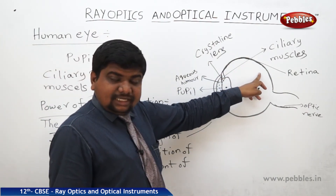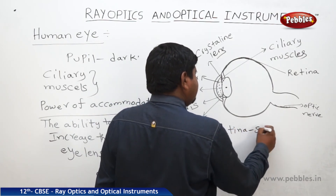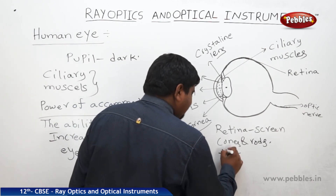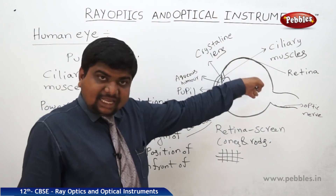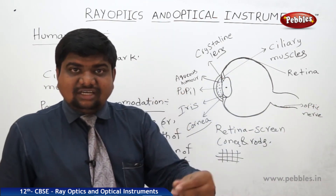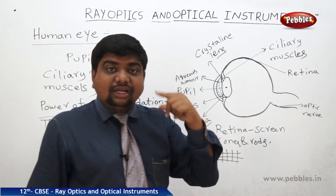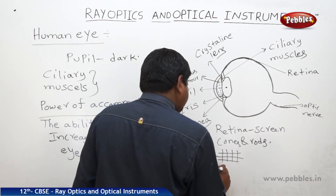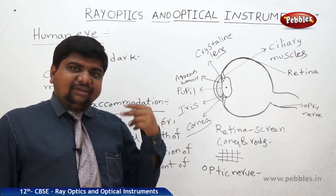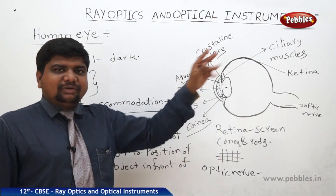The ciliary muscles are connected to the retina, which acts like a screen containing cones and rods shaped perpendicularly like a metal grill. The retina absorbs light and can identify the color of the object. It is connected to the optic nerve, which converts light signals into electromagnetic waves for the brain. This whole process occurs in a fraction of a second, allowing us to identify objects clearly.